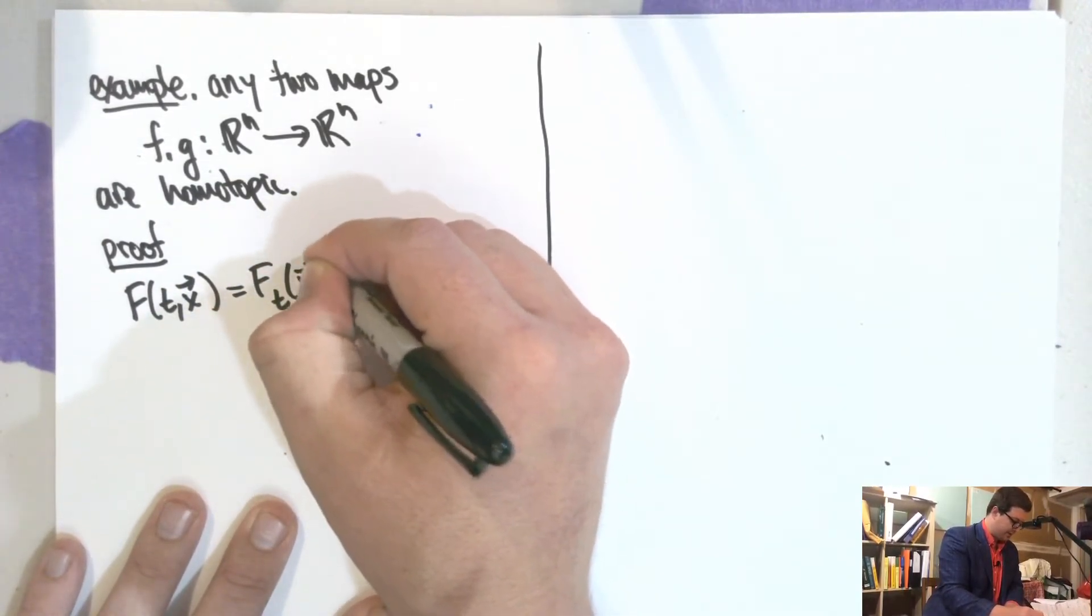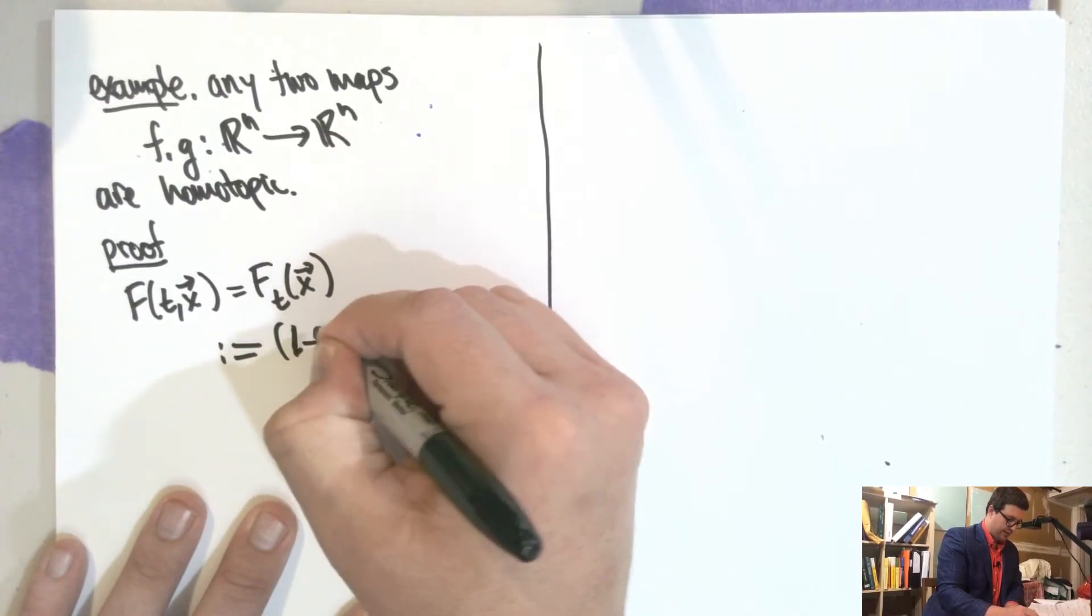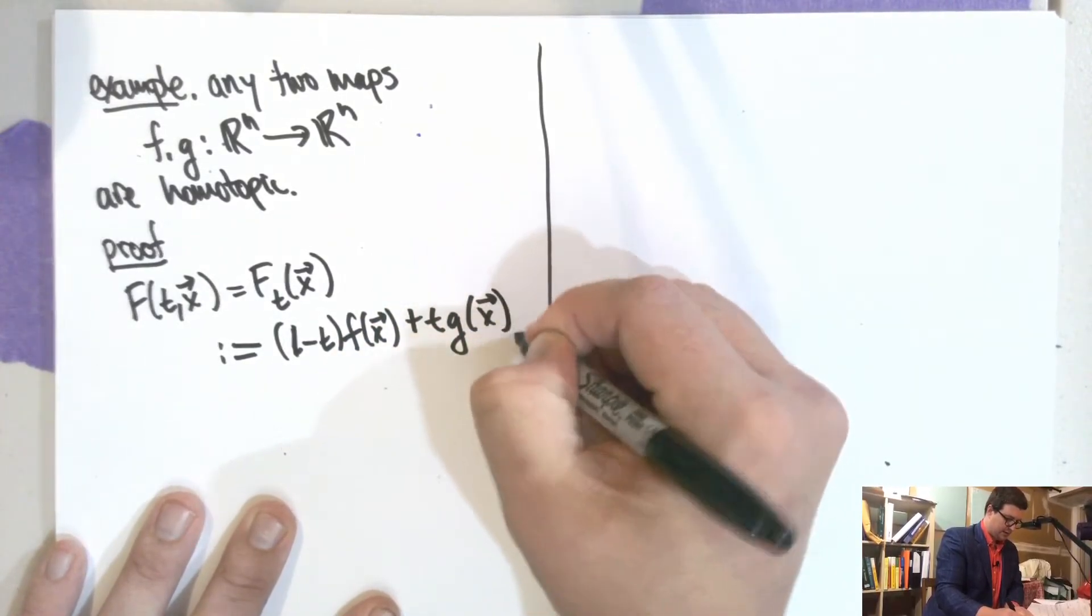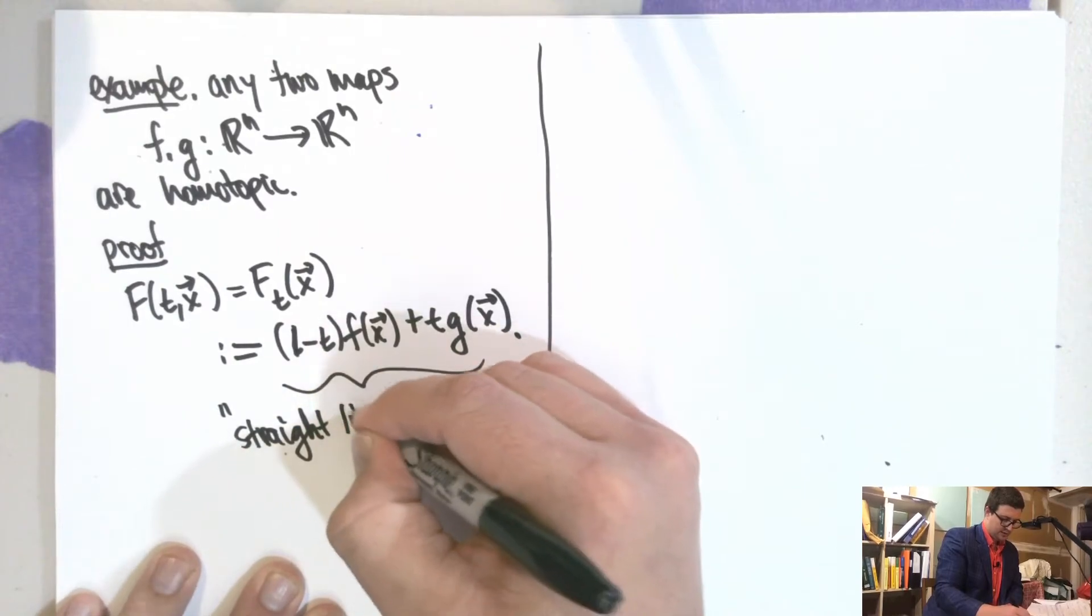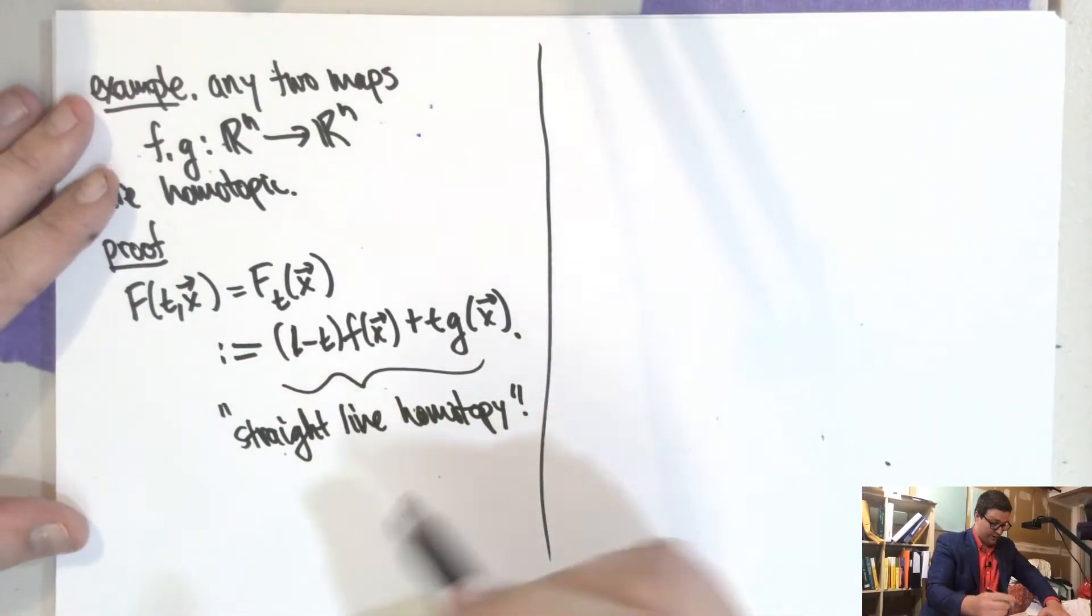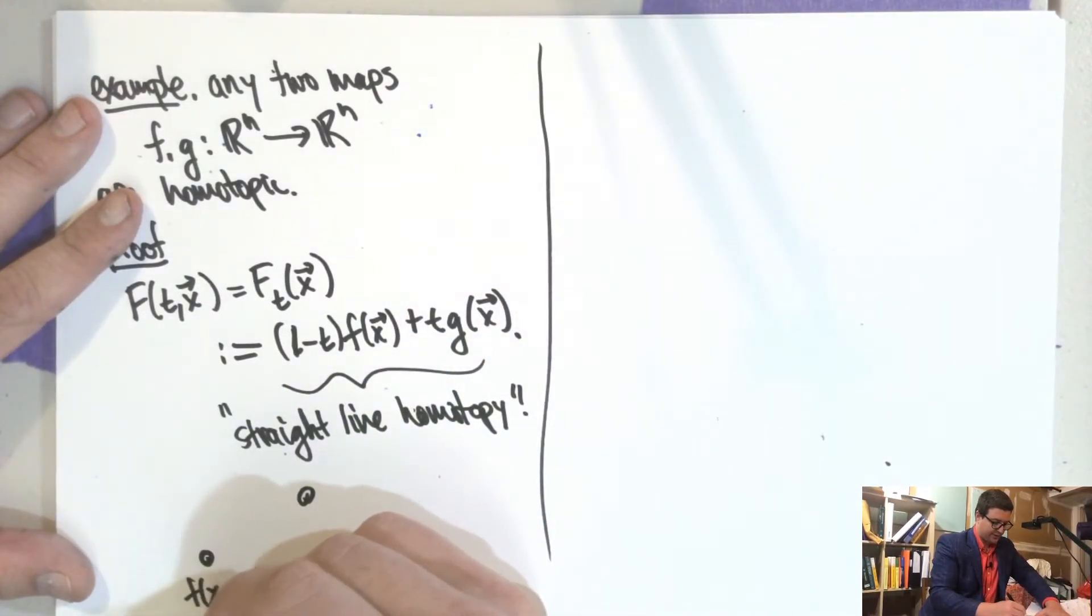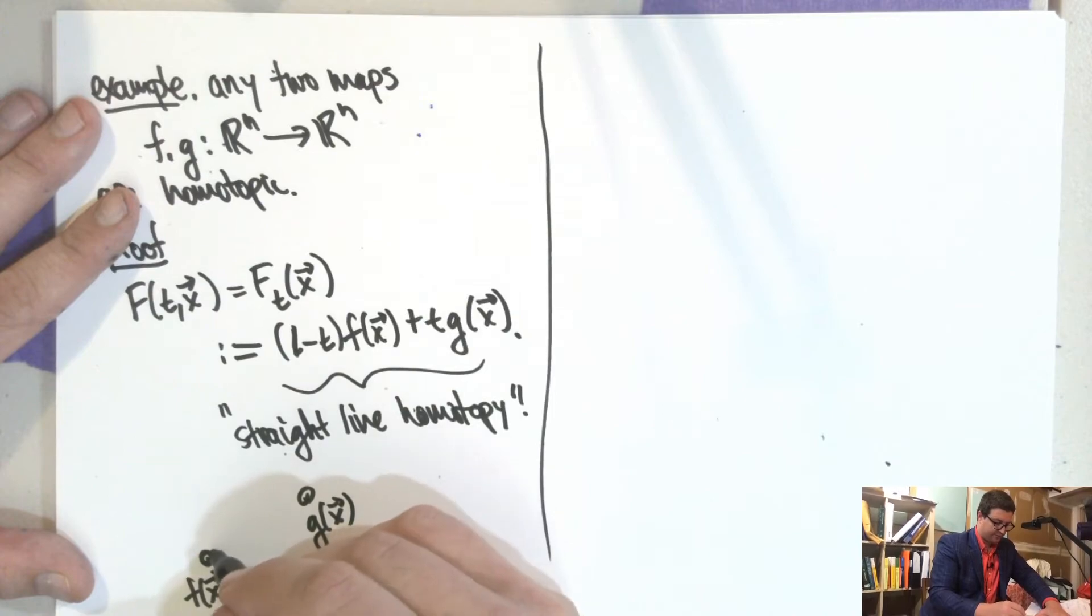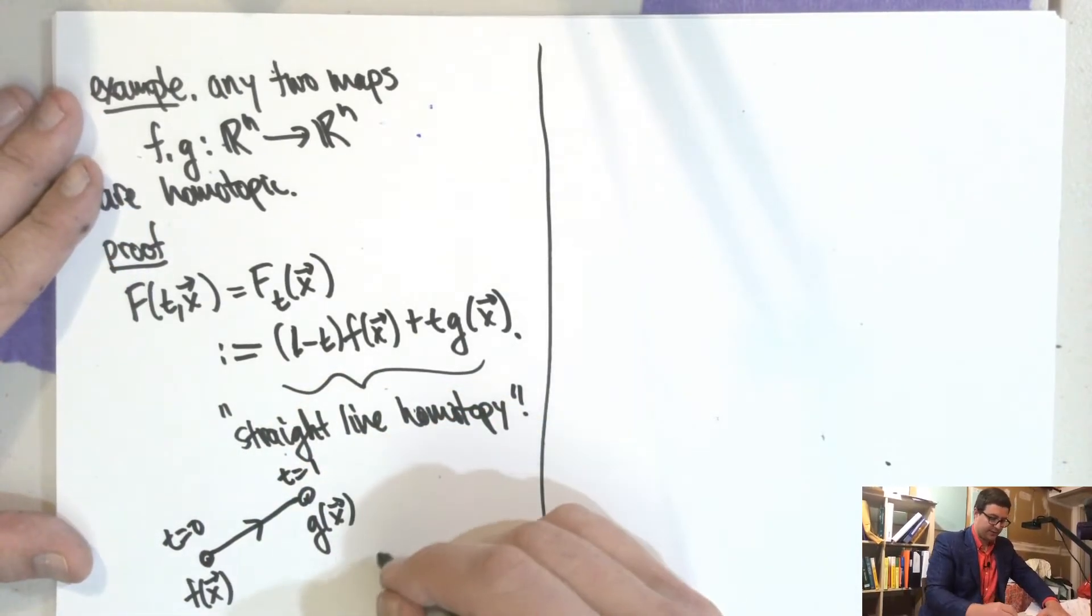We'll sometimes use this notation. So that this is the function at T. So this is (1 minus T) F(X) plus T G(X). So this thing is called a straight line homotopy. Why is it called a straight line homotopy? Here's F of X, here's G of X, and then the path just goes completely along them. So this is at T equals zero and this is at T equals one. So that's it.